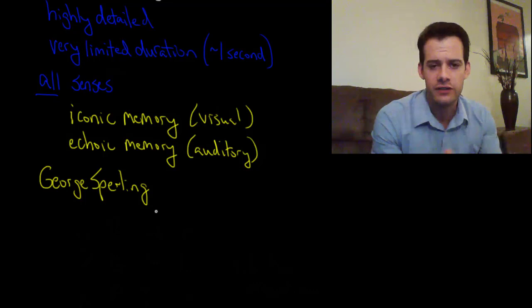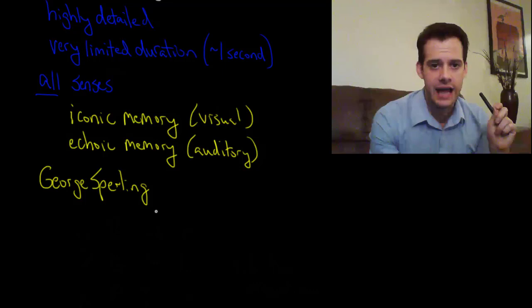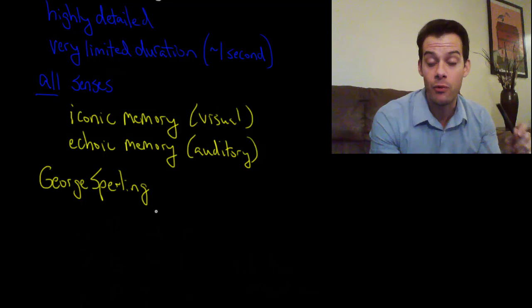And Sperling would flash an array of letters. So twelve letters arranged into three rows, right? Four letters in each row. And they would be there very briefly, less than a second. And then he would ask people to tell him what was on the top row or the middle row or the bottom row.